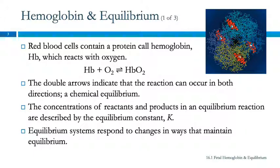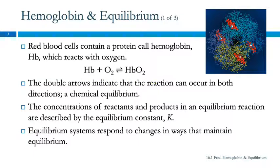The book introduces this topic with a discussion of hemoglobin, which is one of the things keeping us alive. Your red blood cells have a protein called hemoglobin, often abbreviated HB, which reacts with oxygen — the hemoglobin picks up the oxygen and becomes this complex. This is a representation of hemoglobin; it has thousands of carbon atoms, but it has four sites where oxygen binds in. The double arrow tells us this reaction goes in both directions — it's a chemical equilibrium — and the concentrations of reactants and products are described by the equilibrium constant.